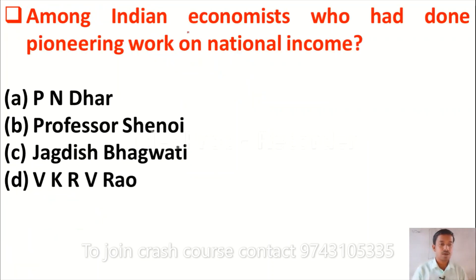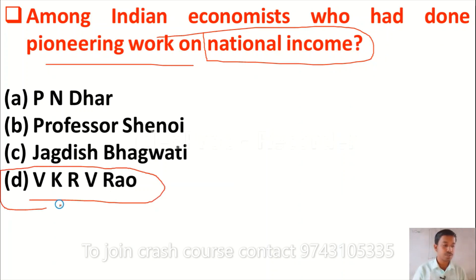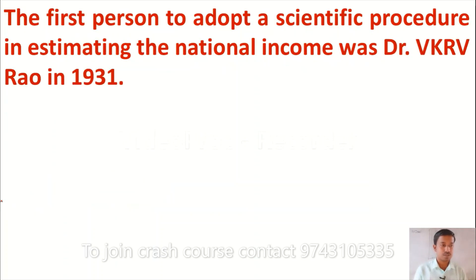The next question is: among Indian economists, who did pioneering work on national income? Option A: PN Dar, option B: Professor Shinoy, option C: Jagdish Bhagwati, option D: VK RV Rao. The correct answer is option D, VK RV Rao. He was the first person to adopt a scientific procedure in estimating national income in India, in the year 1931.